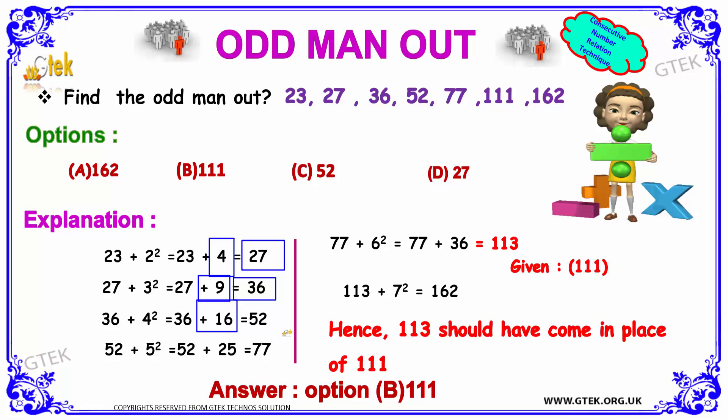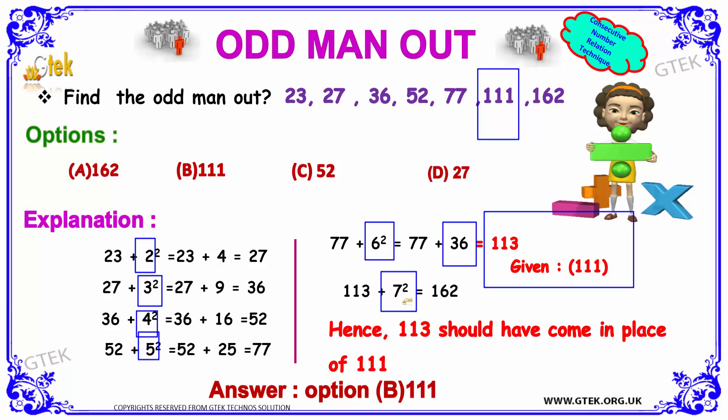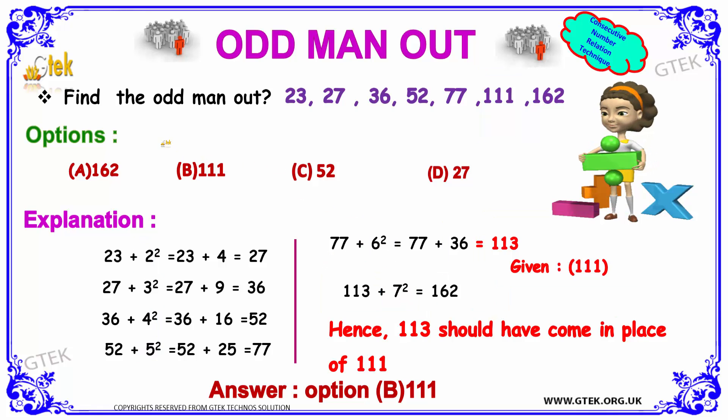52 plus 25 is 77. 77 plus 6 square, 36, is equal to 113 and is given 111. And 113 plus 7 square, so it's 2 square, 3 square, 4 square, 5 square, 6 square, 7 square, it's 162. So the option is triple 1.